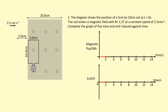It gets more interesting when it starts to enter the field — now the flux through the coil increases up to a maximum where it's completely inside the field. To calculate that flux, we use magnetic flux density times area: 1.2 teslas times the dimensions of the coil converted into metres. That gives us the maximum magnetic flux, which we draw onto the graph as a steady increase up to that point, because it entered at constant speed.